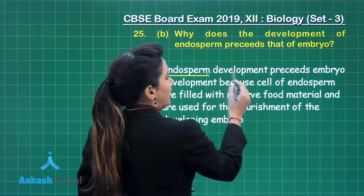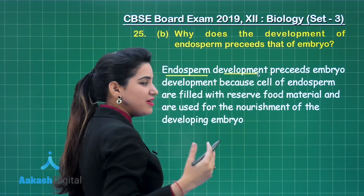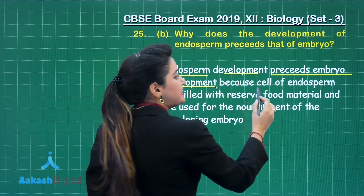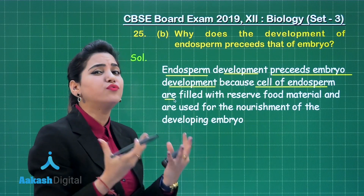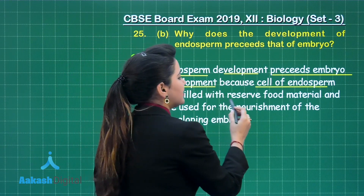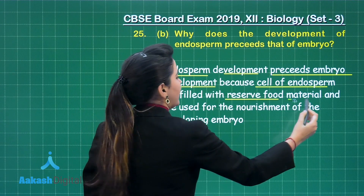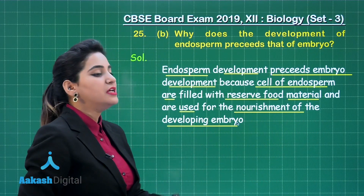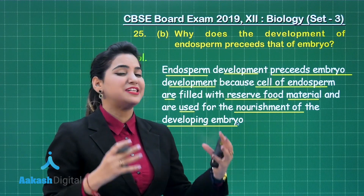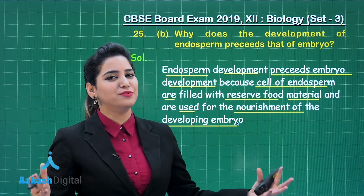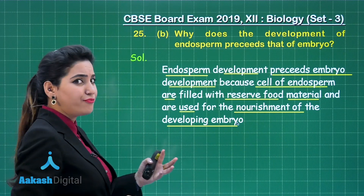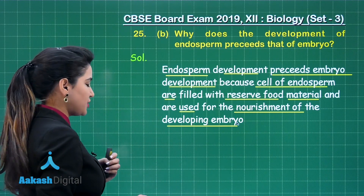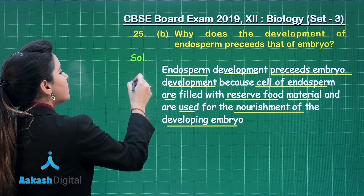Endosperm development precedes embryo development because the cells of endosperm are filled with reserved food material and are used for the nourishment of the developing embryo. Even before the embryo develops, it already has reserved food material waiting. Therefore, endosperm development happens prior to embryo formation, and this is going to give us one mark.